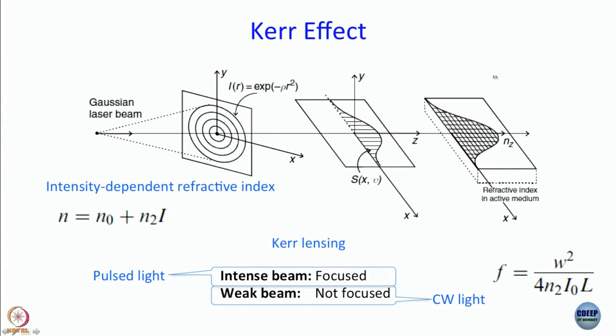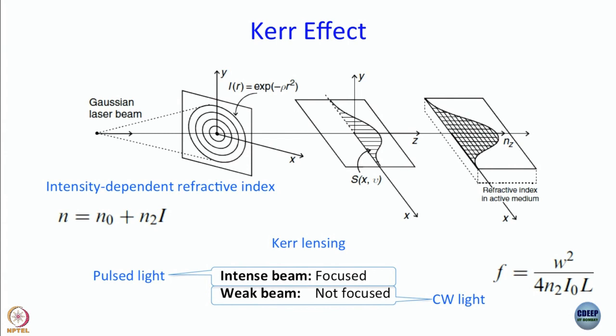Before that, this is just for the record. Again, since you are not deriving, it is not much fun, but just for the record, the focal length of a Kerr lens is given by W0 squared, where W0 is the beam waist. Beam waist once again is full width of maximum of a Gaussian beam by 4*N2*I0 multiplied by L, where L is the thickness of the medium, length of the medium. So now with this understanding, we suddenly have something called Kerr lens mode locking. What is that about? Let us see.